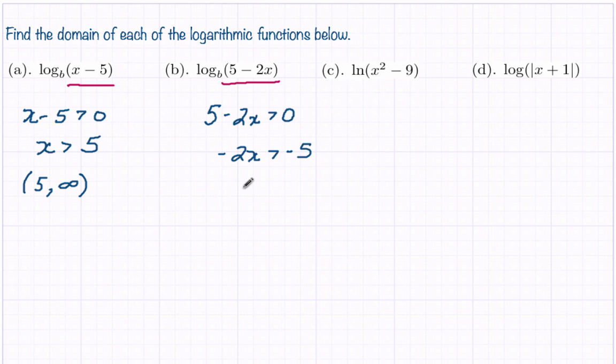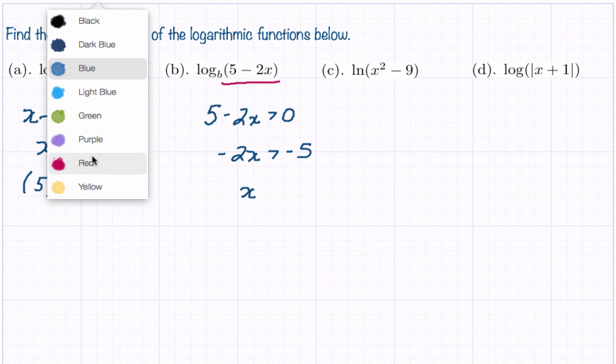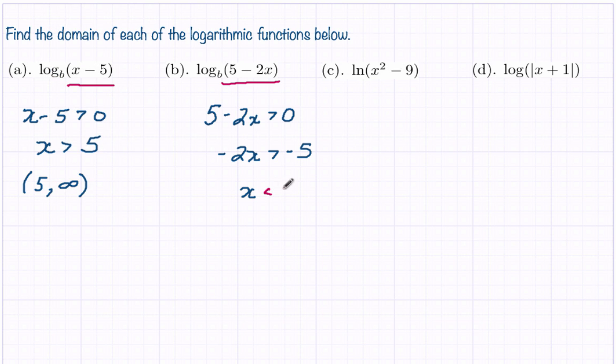So you have to be really careful here. So x actually has to be less than 5/2. So you could say parentheses, and then it's going to go from negative infinity to 5/2 there, (-∞, 5/2). So that's our first two examples.